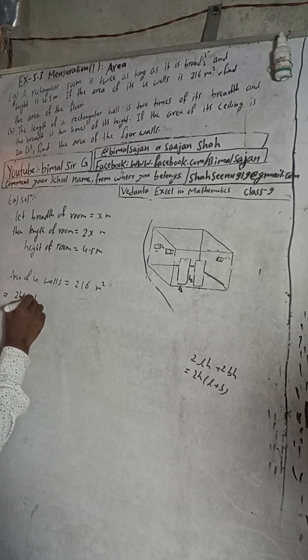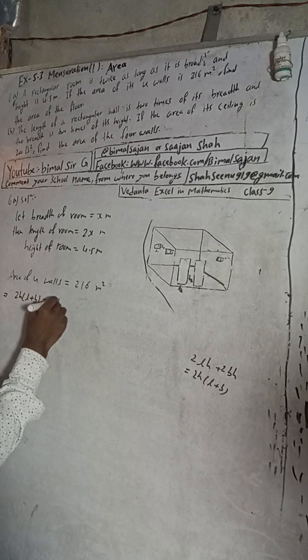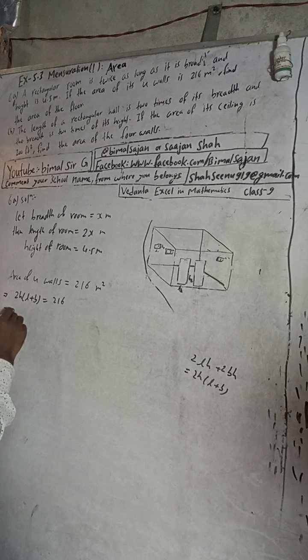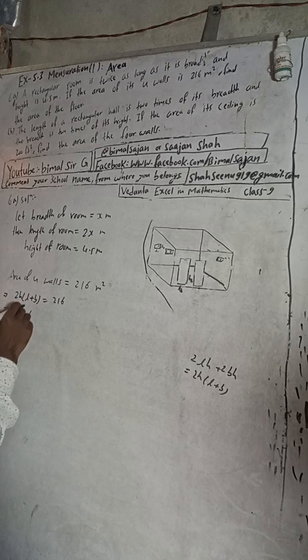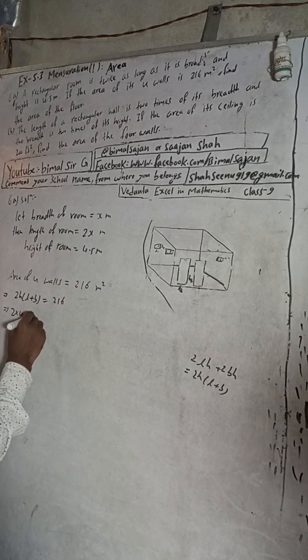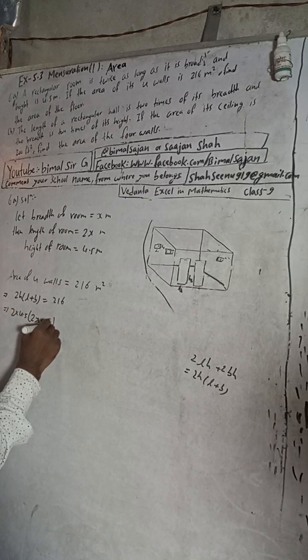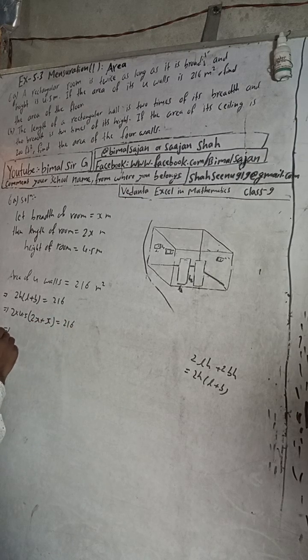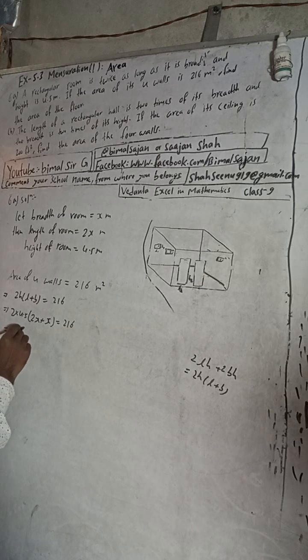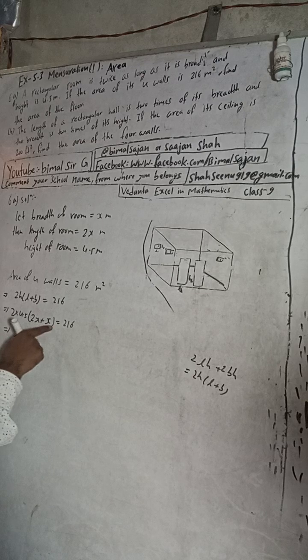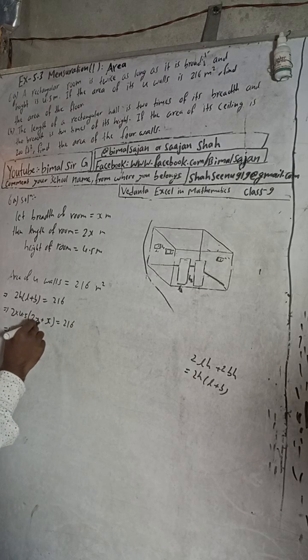Now here, 2h means h value is 4.5, and l value is 2x plus b value is x, equals 216. So 4.5 times 2 will be 9, into bracket 2x plus x. 2x plus x equals 3x.